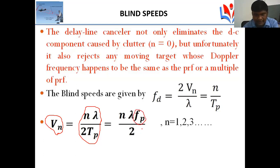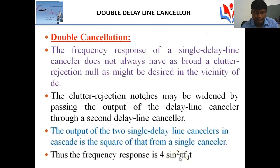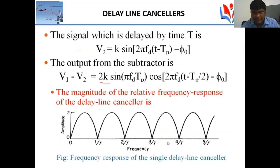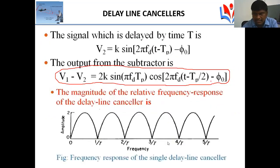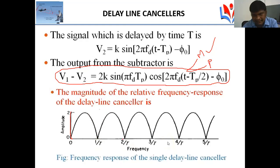fp is the pulse repetition frequency. In the single delay line canceller, we have a subtraction of the output — v1 minus vp. The frequency response is a combination of magnitude response and phase response. With frequency on the x-axis and amplitude on the y-axis, this is the response of the single delay line canceller.